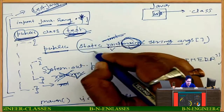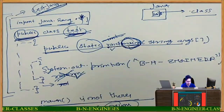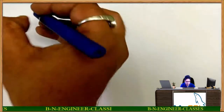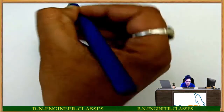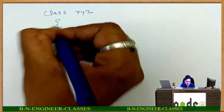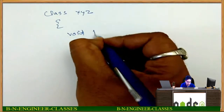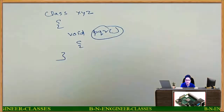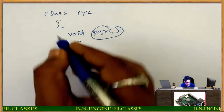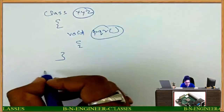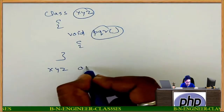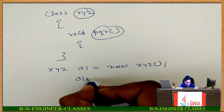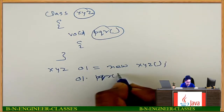Now what is the meaning of static? Basically, whenever we are calling any method — say there is a class XYZ, inside that there is a method void PQR — if you want to call this method PQR in another class, first you have to create an object of class XYZ: XYZ O1 = new XYZ. After that, you write O1.PQR. This is the normal way.